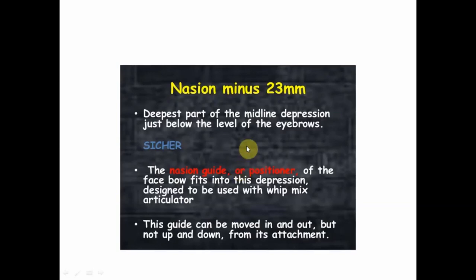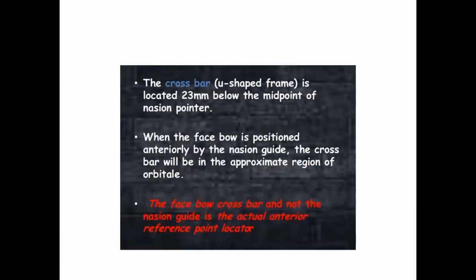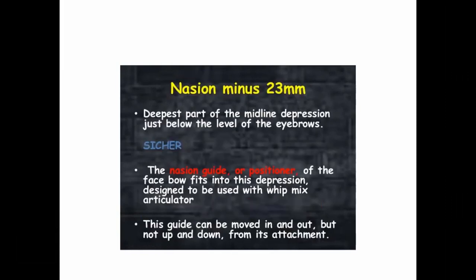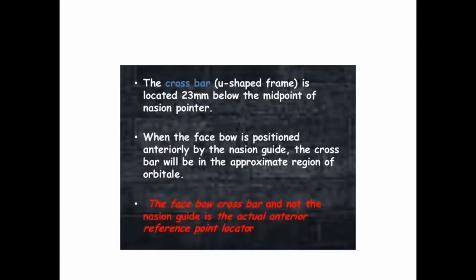Another reference point is the nasion minus 23 mm. The nasion is the deepest part of the midline depression just below the eyebrows — it is at the center of the frontal region of the skull. The position of the facebow fits into this nasion depression; the nasion gate fits into this depression. It is used along with the Whip Mix articulator as the gate can be moved in and out but cannot be moved up and down.